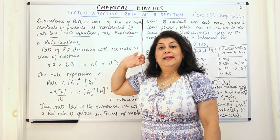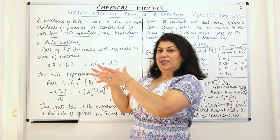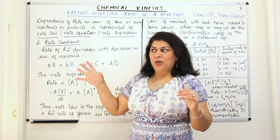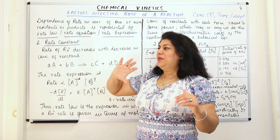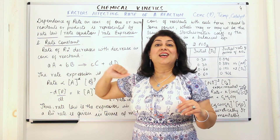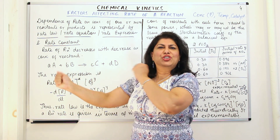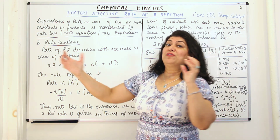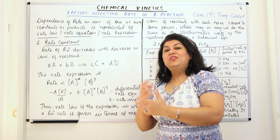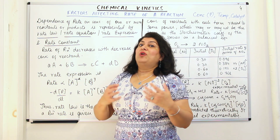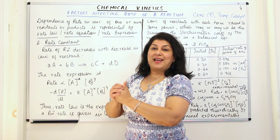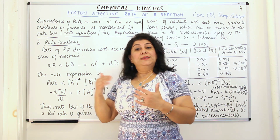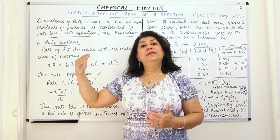When the reaction starts, we only have reactants and we do not have products. So the number of molecules of the reactants is the highest and the number of collisions — the way they collide with each other — because the number is so large, the number of collisions is more. The more the number of collisions, the more the reactants come in contact and the more chance they get to react. Therefore, the rate of the reaction is very high in the beginning.